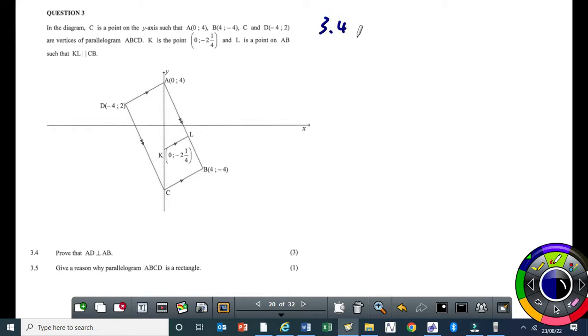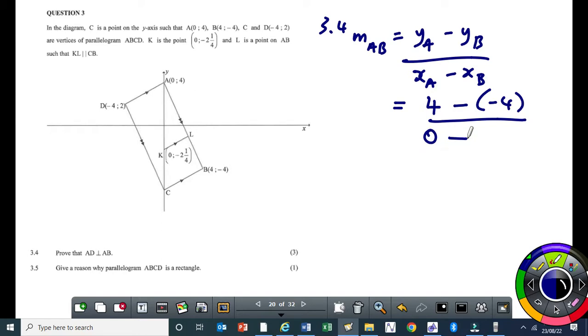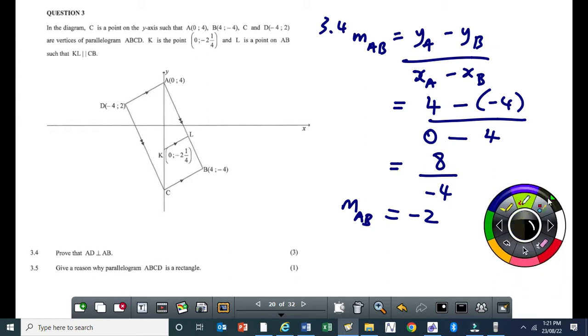So 3.4 m AB is gonna be equal to y A minus y B over x A minus x B. y A is 4. What is y B? It's negative 4. Over x A which is 0 minus x B which is 4. So my numerator is gonna be 8, and denominator will be negative 4, so it gets negative 2. Are you following?